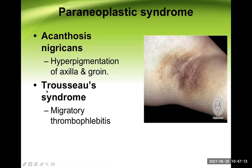Another important paraneoplastic feature is Trousseau's syndrome — migratory thrombophlebitis, which is inflammation of the superficial veins that migrates from one vein to another. One superficial vein is affected, and after two to three days another vein becomes involved with a similar mechanism. Trousseau's syndrome is also seen in pancreatic malignancy.